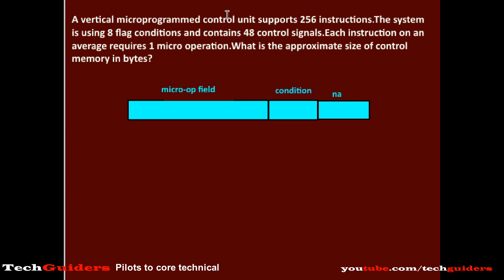The vertical micro-programmed control unit supports 256 instructions, so we can say there are 256 micro-instructions. The number of bits in the next address field can be calculated. There are 256 micro-instructions, hence the number of bits in the address field is 8 bits.